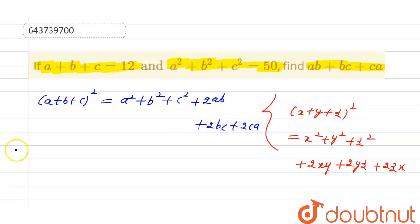Now we can put the values. So this is equal to 12 raised to the power 2. The value of a squared plus b squared plus c squared is 50.